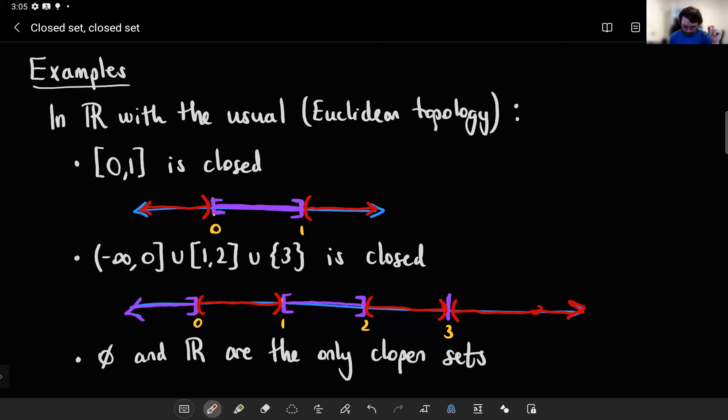And let's just talk briefly about why they're clopen. First of all, we know they're both open by the definition of a topology. Properties 1 and 2 said the empty set and the whole space must be open. But they're also complements of one another. Right? So the complement of the empty set is the whole space, the complement of the whole space is the empty set. And we know the complement of an open set is a closed set, so they each have to be closed as well. They're open, so their complements are closed. They're mutually complements of one another, so they're both open and closed.